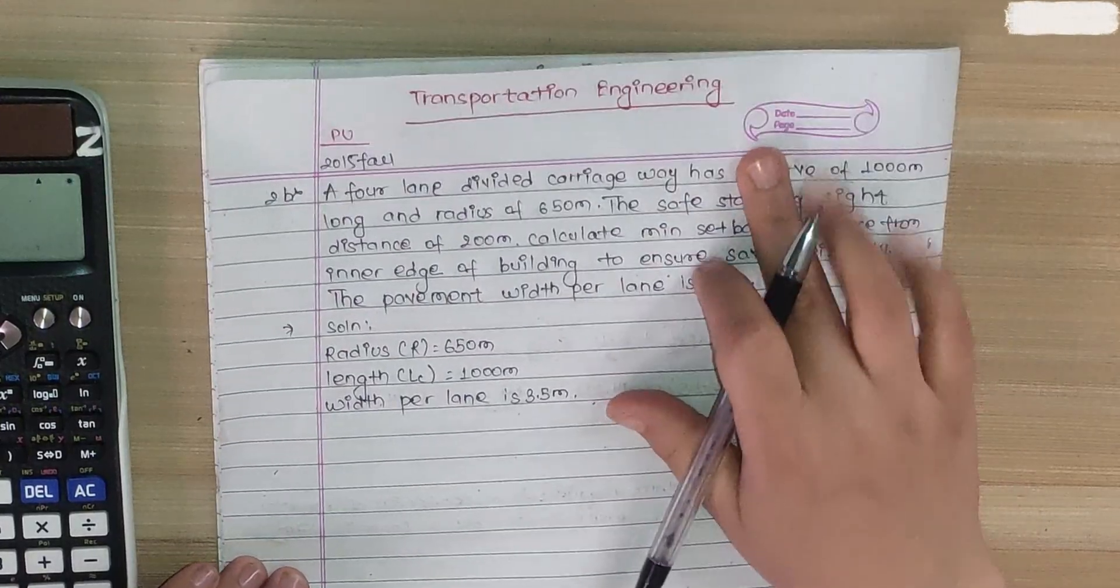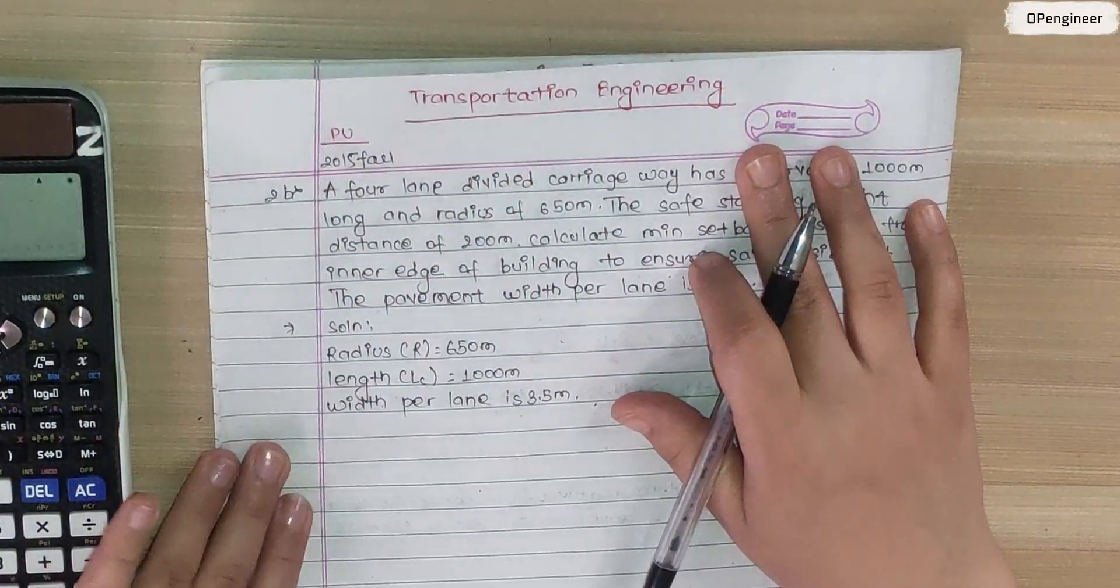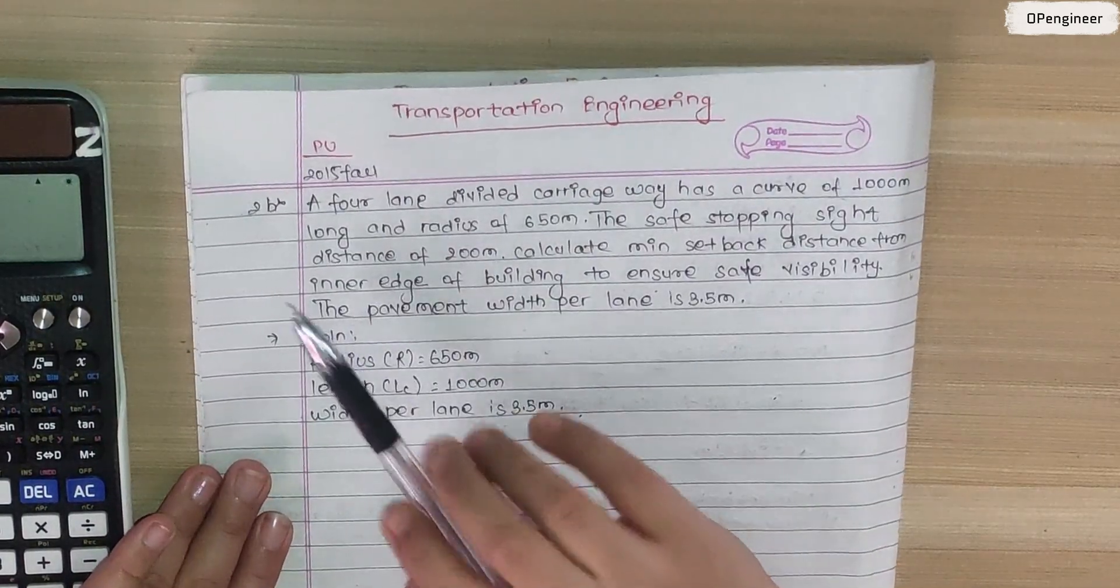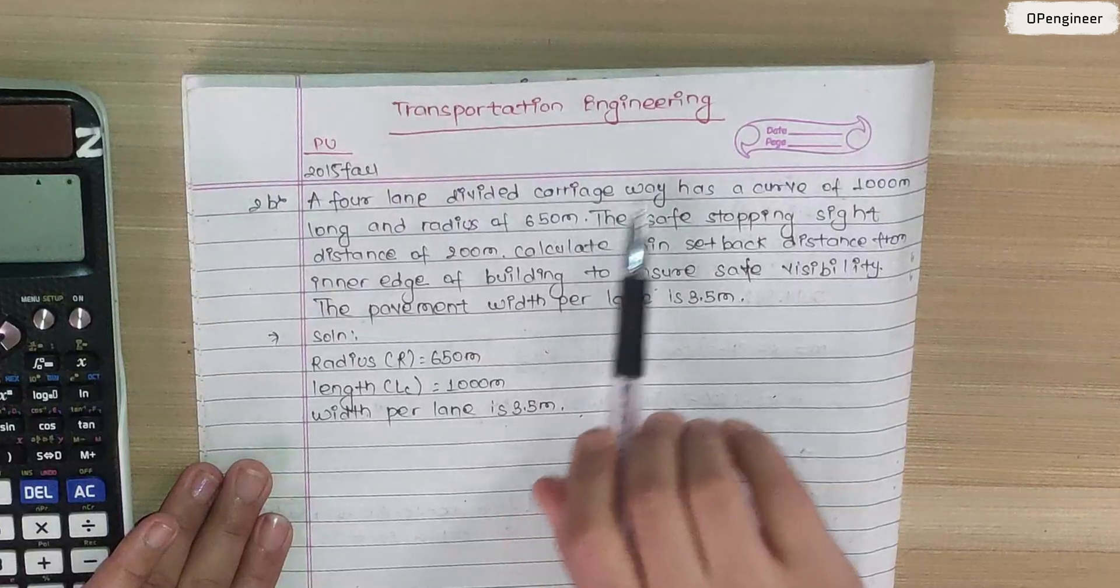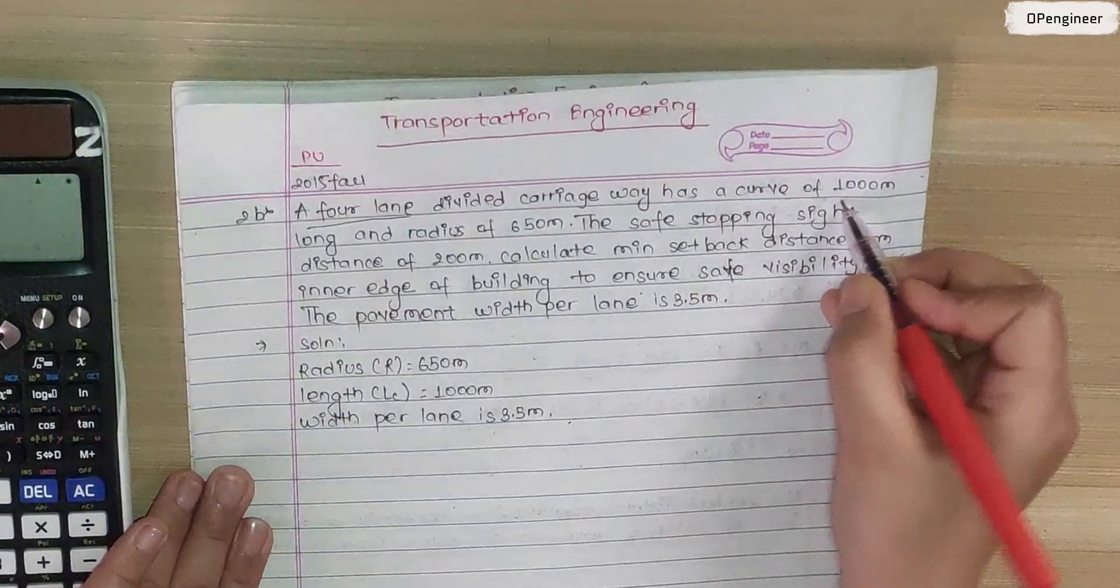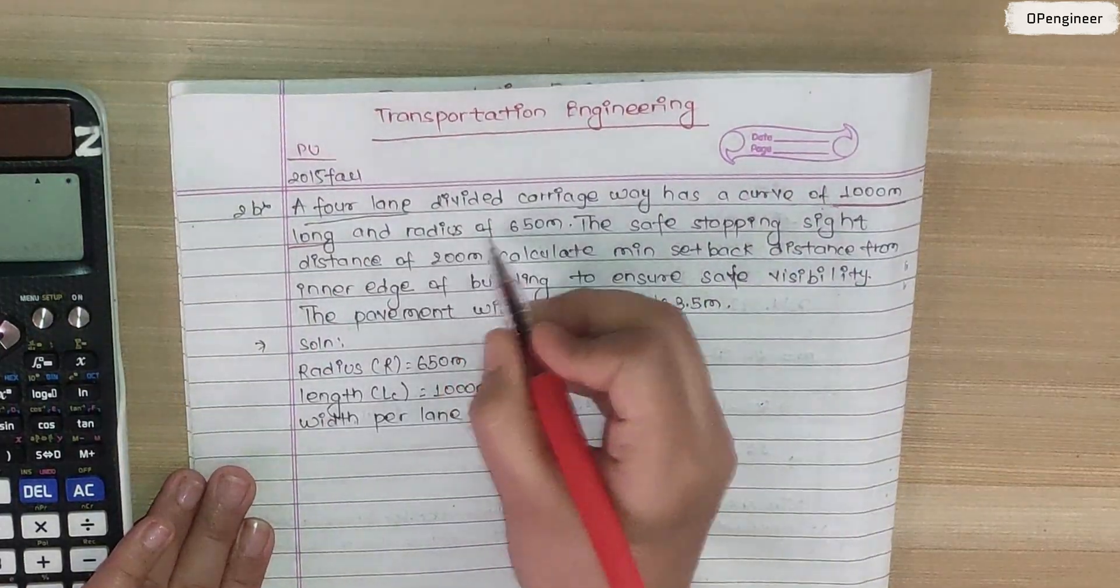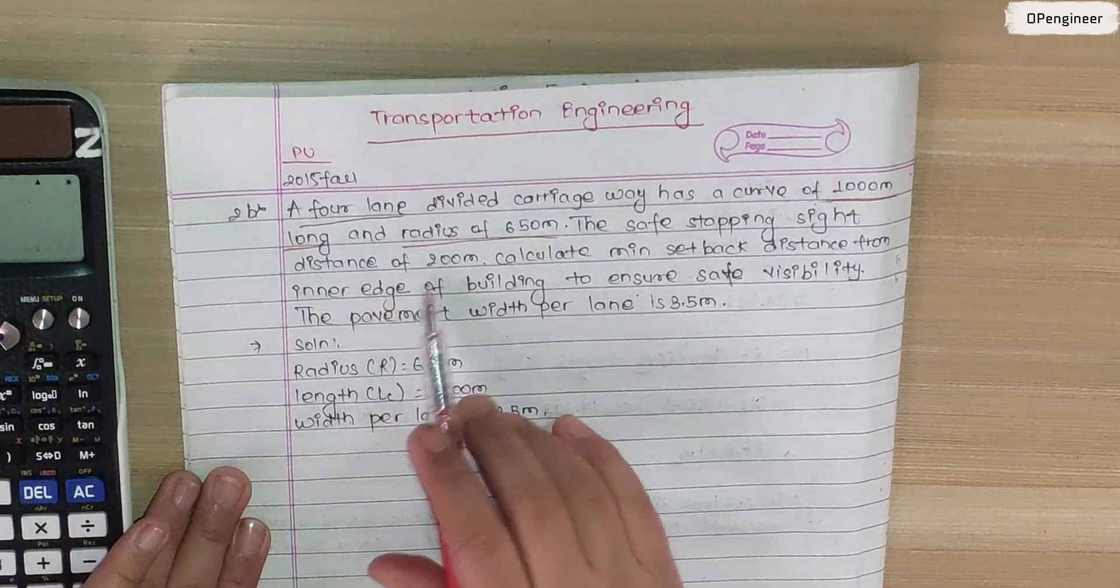This is a Transportation Engineering CO 2015 Fall P.U. Pokhara University CO 2B question. The question is: A four-lane divided carriageway has a curve of 1000 meter long and a radius of 650 meter.